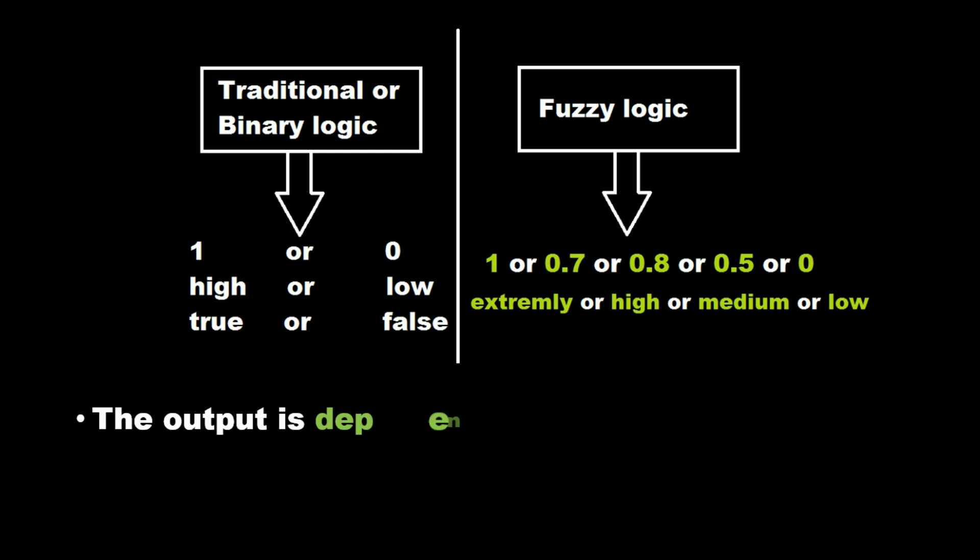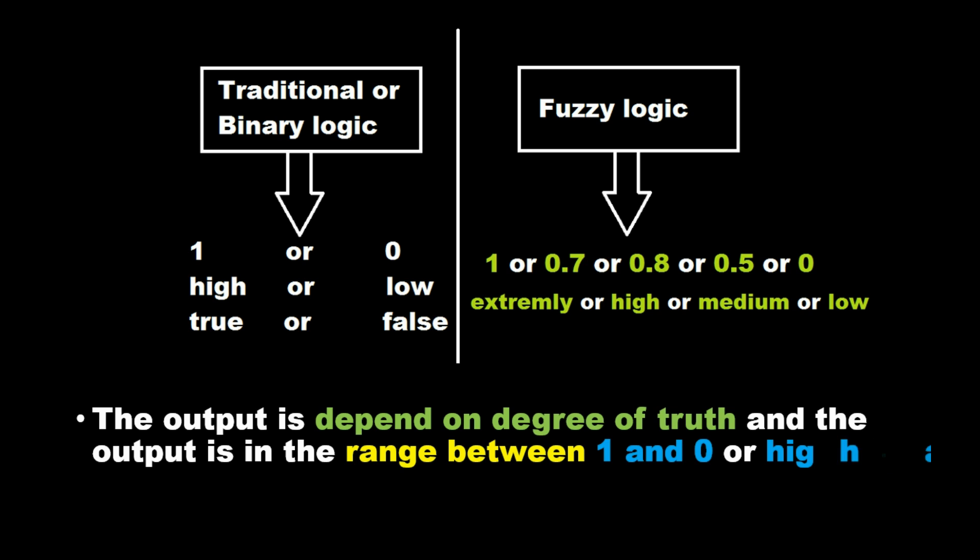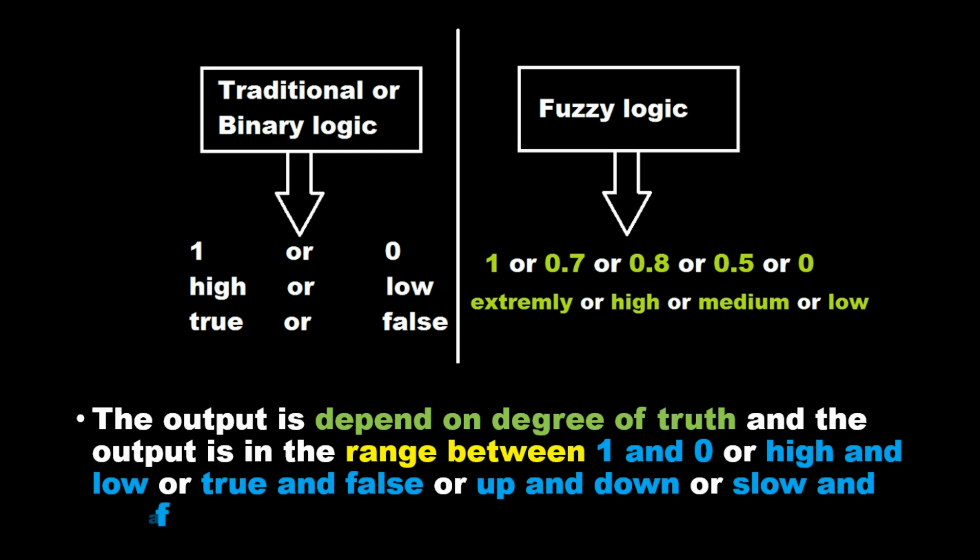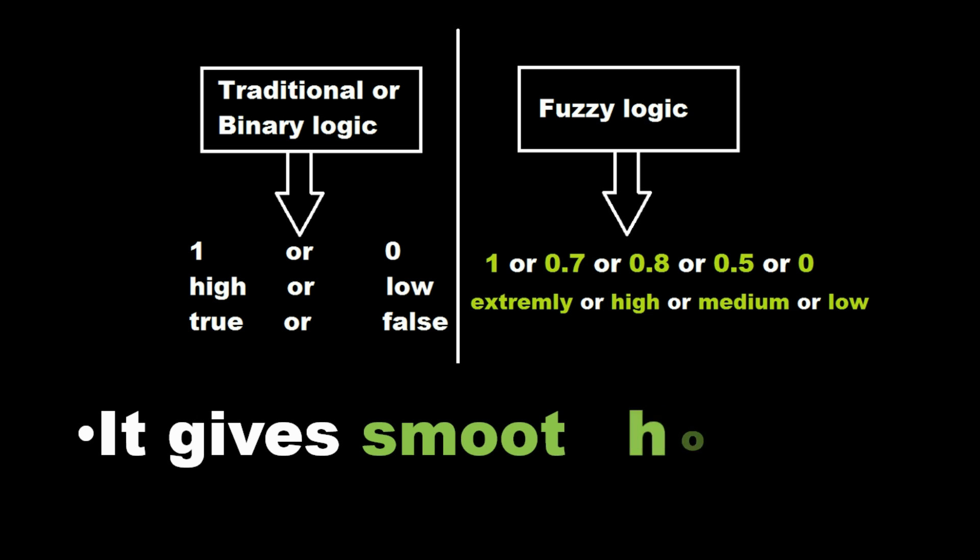The output depends on the degree of truth and is in the range between 1 and 0, or high and low, or true and false, or up and down, or slow and fast. It gives smooth output.